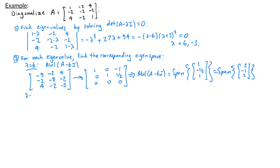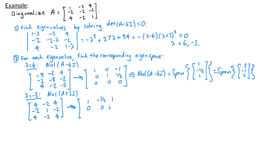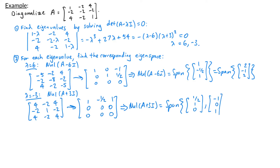Next we want to find the eigenspace for lambda equals negative 3, so I want the null space of A plus 3I. The matrix A plus 3I is 4, negative 2, 4, negative 2, 1, negative 2, 4, negative 2, 4. This row reduces to 1, negative one half, 1, 0, 0, 0, 0, 0, 0. This tells me that the null space of A plus 3I is the span of two vectors: one half, 1, 0 and negative 1, 0, 1. To avoid fractions, I can multiply the first vector by 2 and rewrite this as the span of 1, 2, 0 and negative 1, 0, 1.